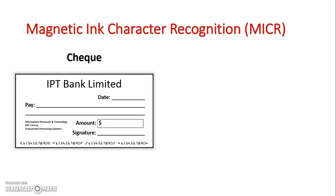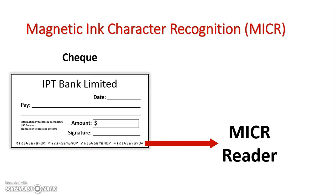Once we actually enter this in, all that's getting read is the bottom by the MICR reader. We attain all that data, and this document is then verified. I hope that gives you a better understanding of how MICR is used for entering data into a transaction processing system. The MICR characters are read from the bottom of a document by an MICR reader, and entered straight into a transaction processing system, which validates the document.